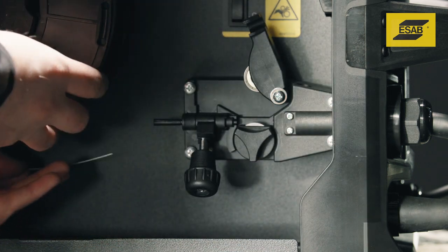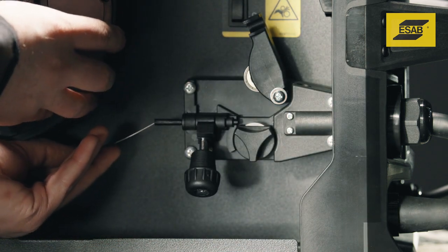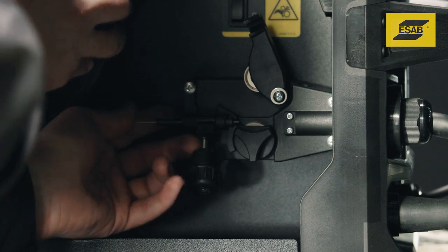At this point, hand feed the wire through the inlet guide past the feed rolls and push it a few inches into the gun.